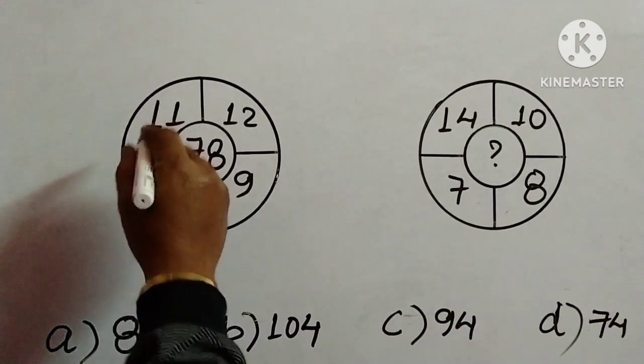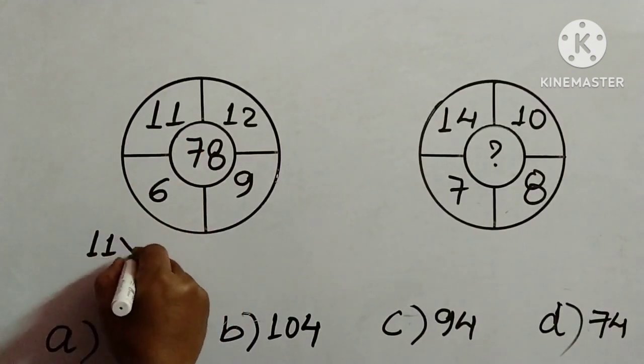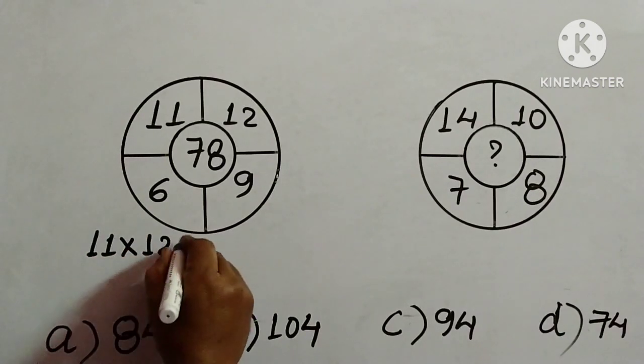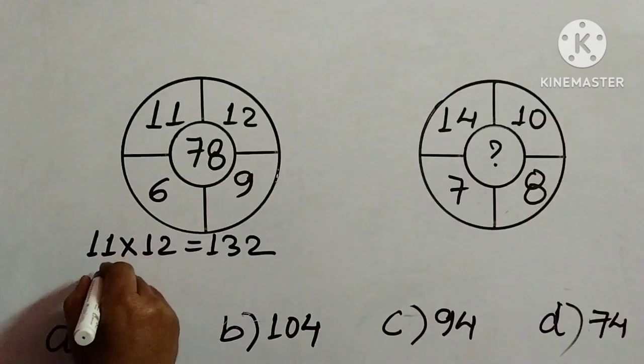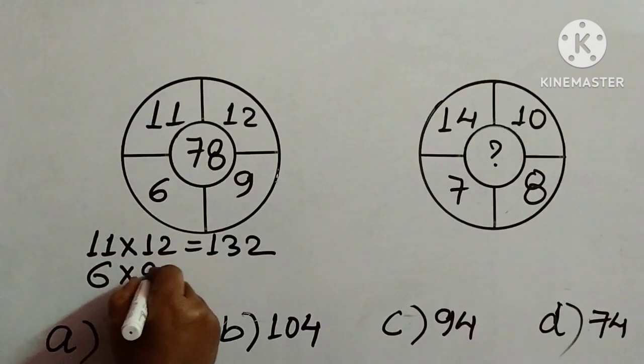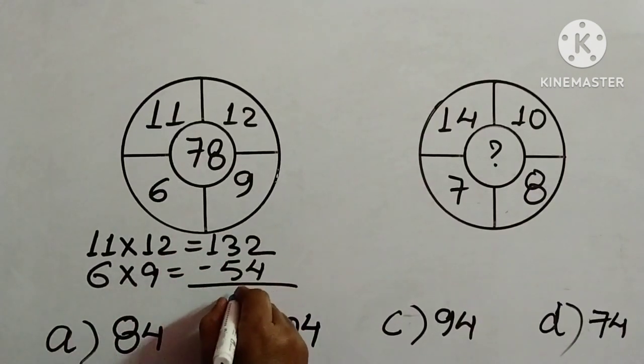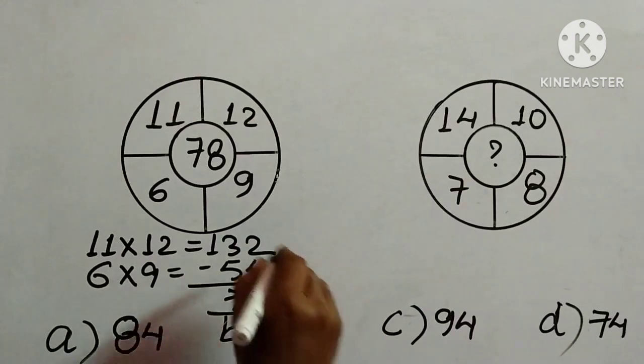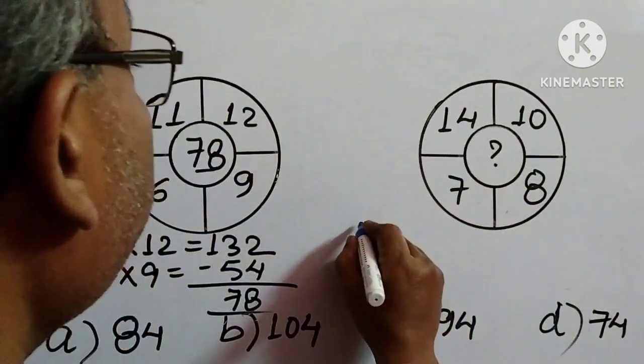We will consider this first figure. 11 into 12 is 132, and then 6 into 9 is 54. Now you subtract this one. The result is 78, which is given. So we have to apply the same thing for this one.